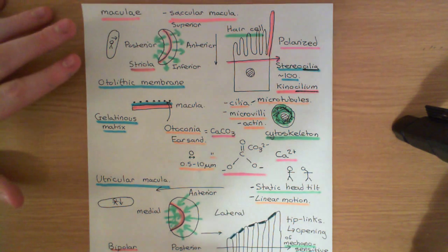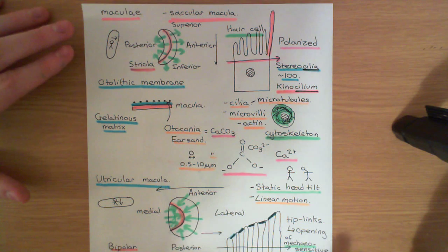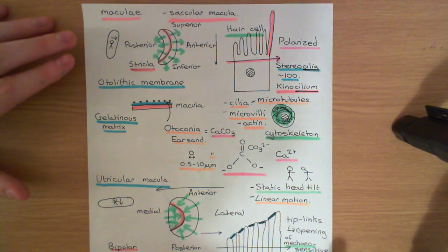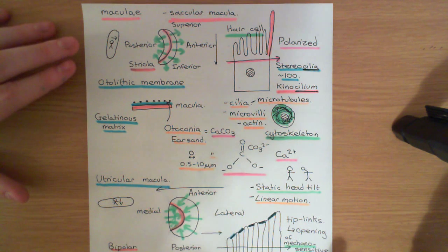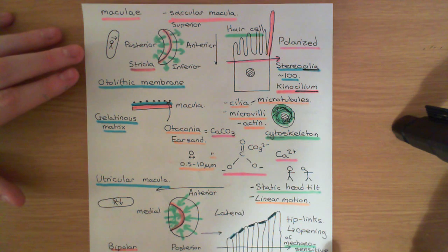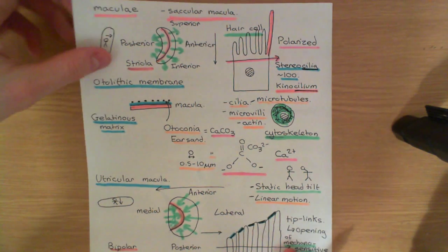Next, what we want to move on to is discussing the semicircular ducts within the semicircular canals. We want to discuss what these semicircular ducts are going to do, what sort of sensory information they're going to give us, what the sensory structure within the semicircular ducts is, and how it's going to encode that information. Let me just get a new piece of paper and then we'll start to study this.